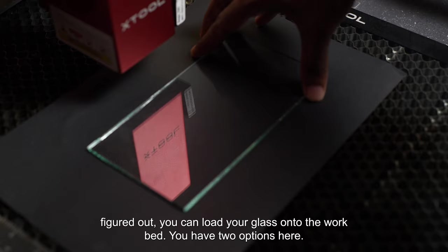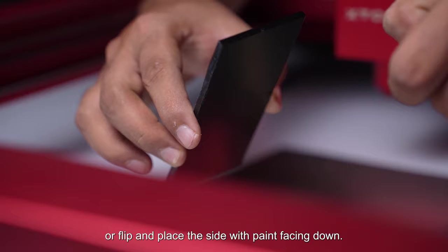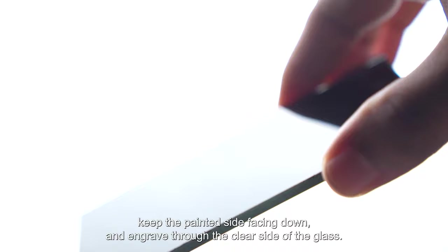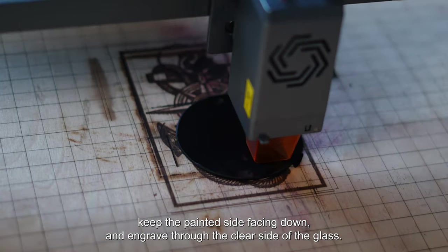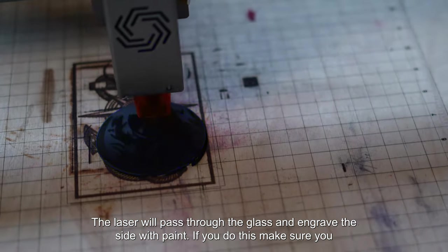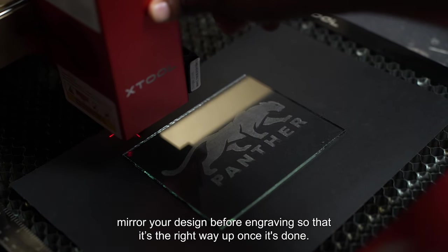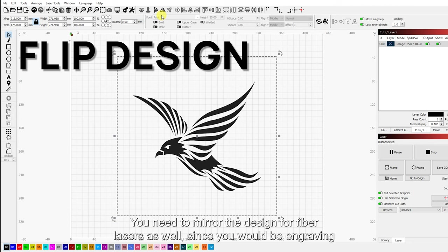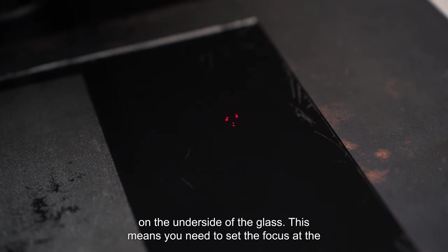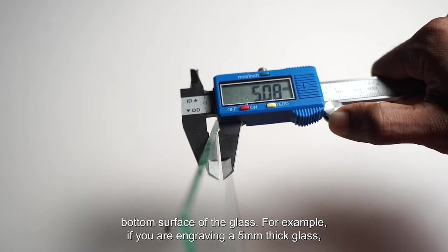Once you have the speed and power figured out, you can load your glass onto the work bed. You have two options here: you can either engrave directly on top of the glass, or flip and place the side with paint facing down. If you think the coat is uneven, you can always flip the glass, keep the painted side facing down, and engrave through the clear side of the glass. The laser will pass through the glass and engrave the side with paint. If you do this, make sure you mirror your design before engraving so that it's the right way up once it's done. You need to mirror the design for fiber lasers as well since you would be engraving on the underside of the glass.